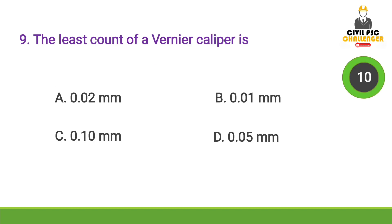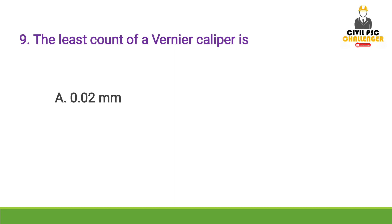Next question: The least count of a vernier caliper is — Answer: Option A, 0.02 mm. The least count of a vernier caliper is 0.02 mm. Remember this for the exam.